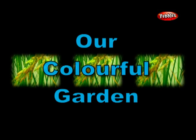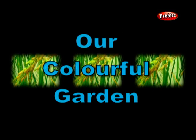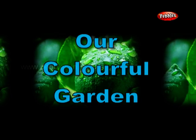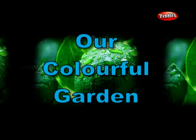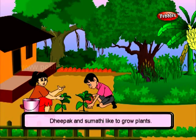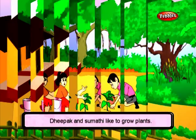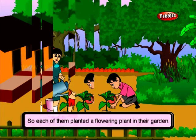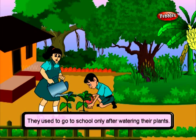Our colourful garden. Deepak and Sumati like to grow plants, so each of them planted a flowering plant in their garden. They used to go to school only after watering their plants.